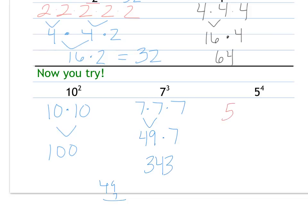Last one: five to the fourth is five times itself four times. Notice it's not five times four — it's five times five, four times. So you get twenty-five times twenty-five, for a total of six hundred and twenty-five.